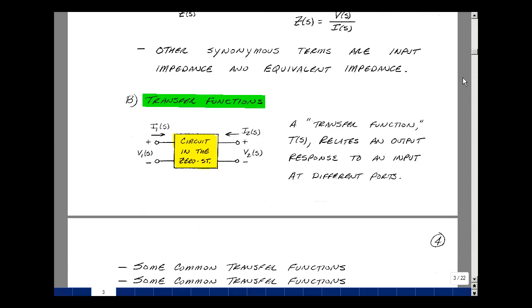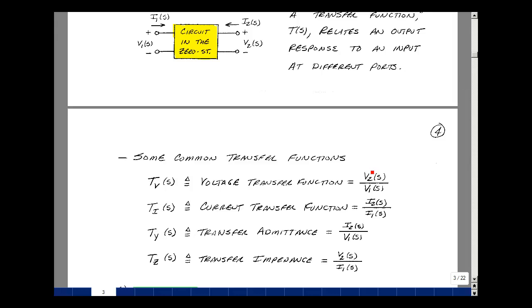We'll define a transfer function as the ratio of outputs to inputs. There's four possible combinations. We could define the output voltage over the input voltage. Call that a voltage transfer function, T_V. We could talk about the current I2 divided by I1 as another transfer function, but for current, and call that T_I.